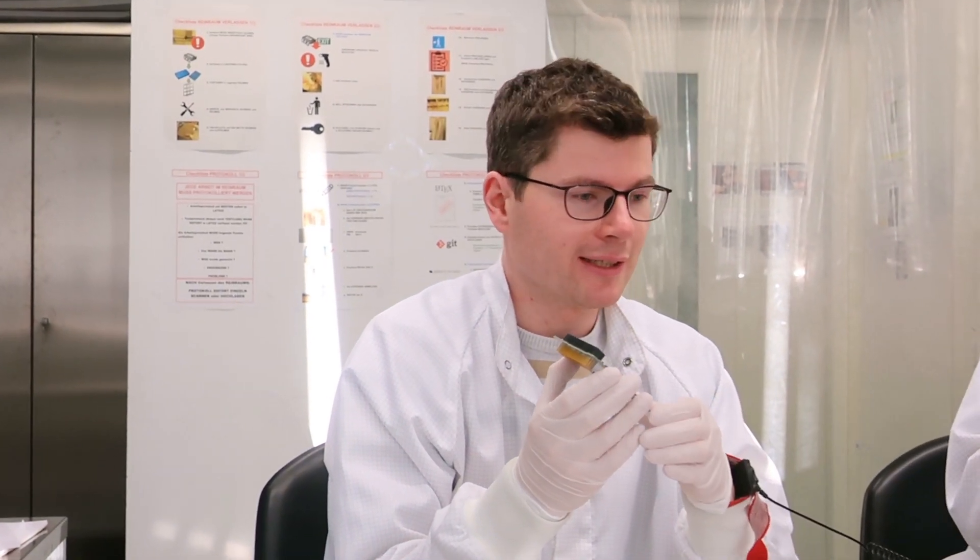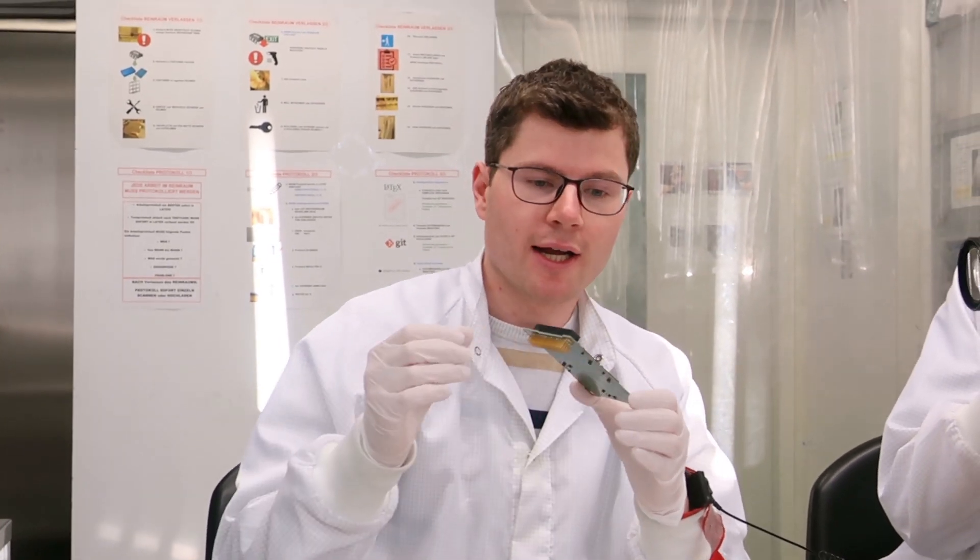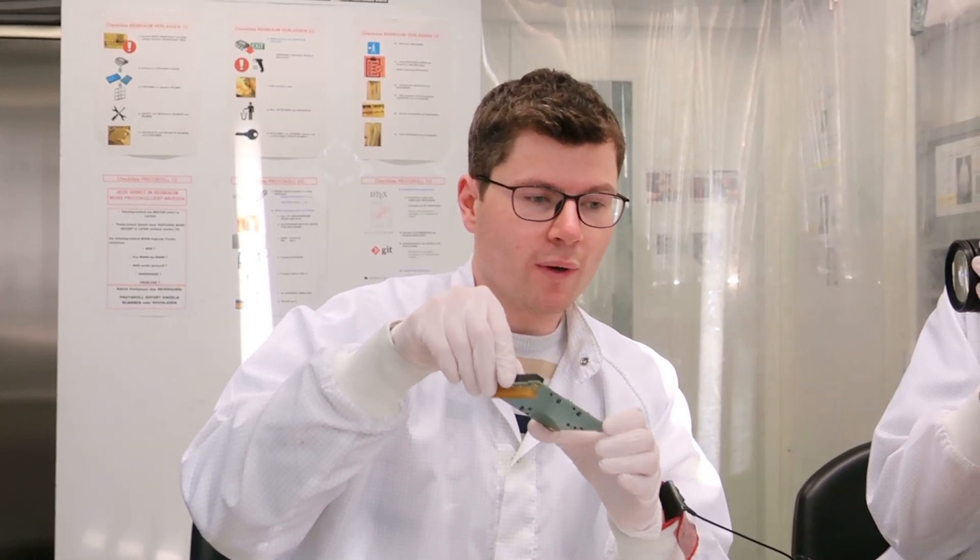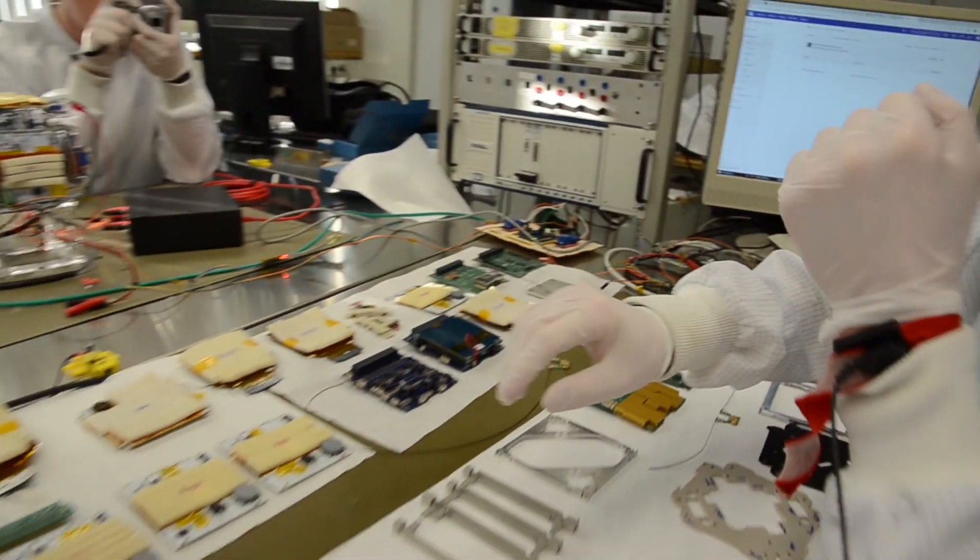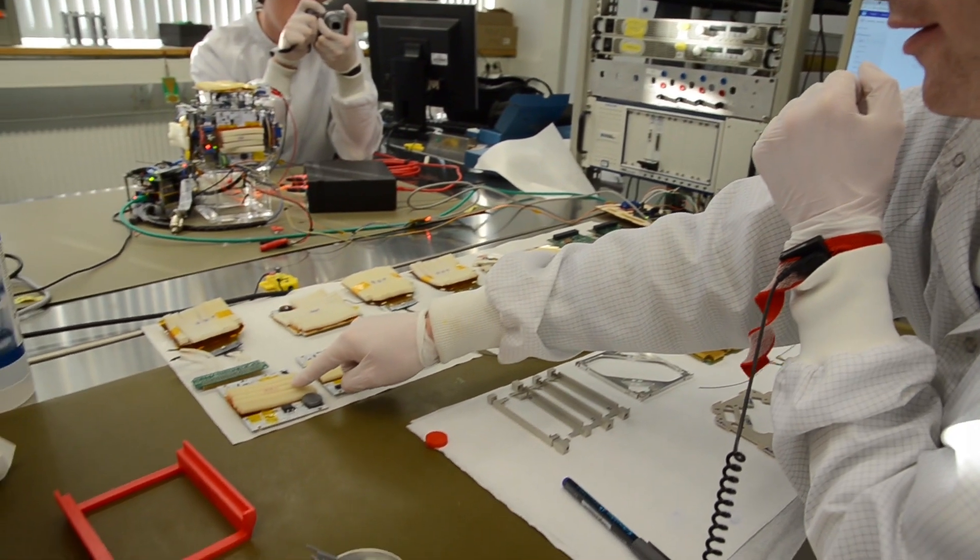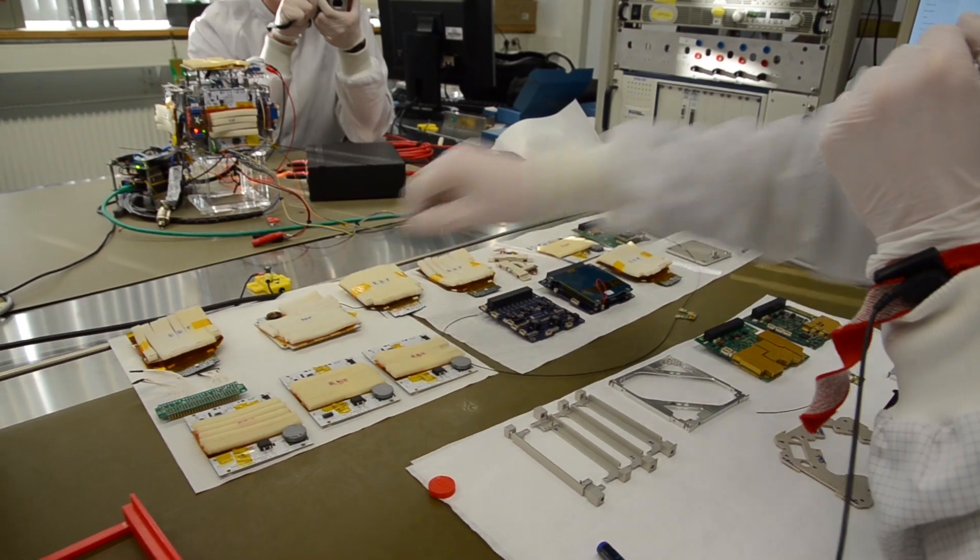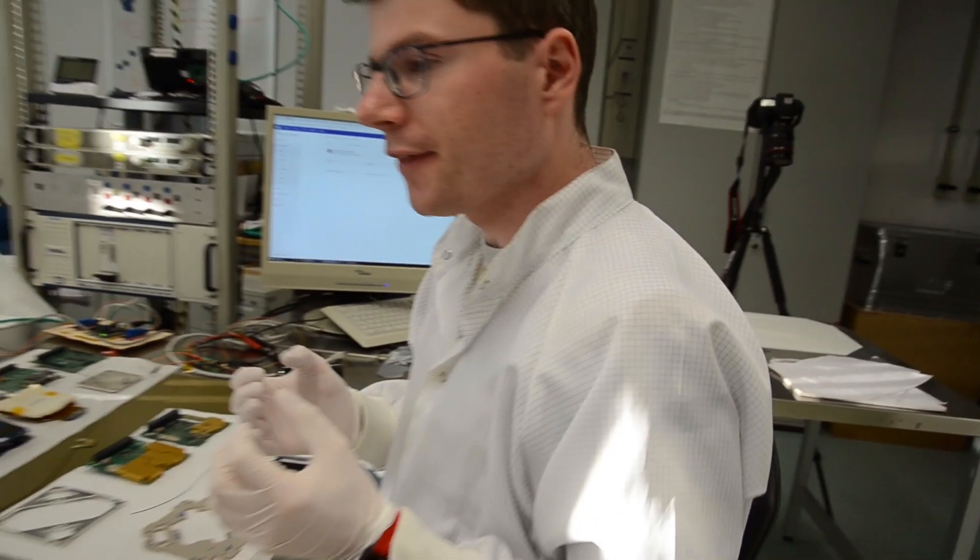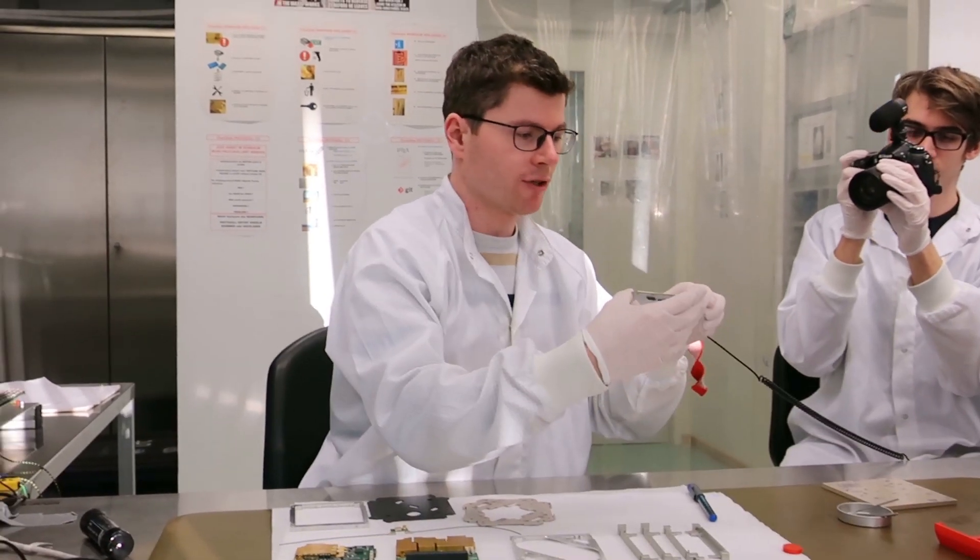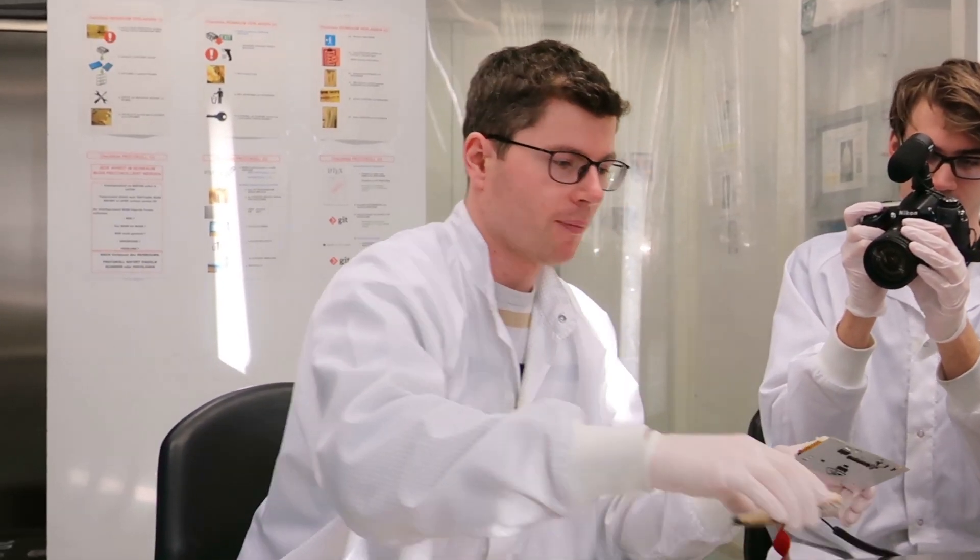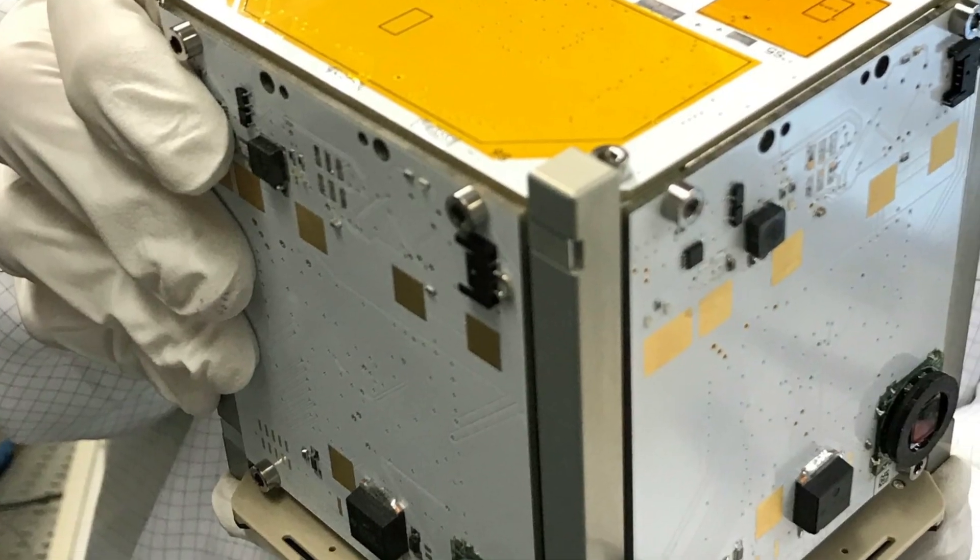And those coils are actually on quite a few other boards. Those five boards here, four side panels and one top panel, they are on the outside of the satellite. If you take multiple of these, you can actually see how they make up the cubical shape of the satellite.